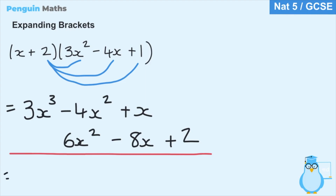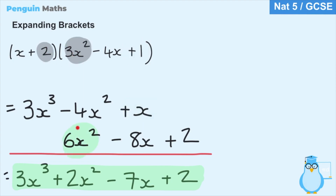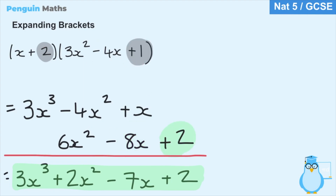For the x cubed terms we just have 3x cubed. For the x squared terms we have minus 4x squared plus 6x squared — and 6 minus 4 gives us positive 2x squared. For the x terms we have plus x minus 8x, giving minus 7x. And finally the constant is just plus 2. So our final expanded and simplified answer is 3x cubed plus 2x squared minus 7x plus 2.